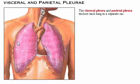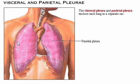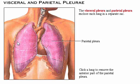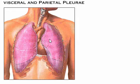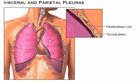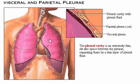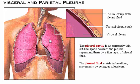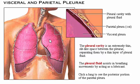The visceral pleura and the parietal pleura enclose each lung in a separate sac. The frosty layer covering the lungs is the portion of the parietal pleura that lines the anterior thoracic wall. After removing the anterior part of the parietal pleura, we can see the visceral pleura covering the surface of the lungs and the cut edges of the parietal pleura. The pleural cavity is an extremely thin, slit-like space between the pleura, separating them by a thin layer of pleural fluid, which assists in breathing movements by acting as a lubricant.